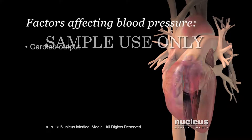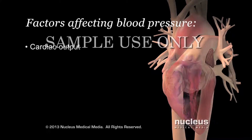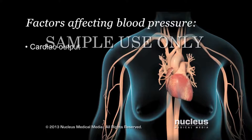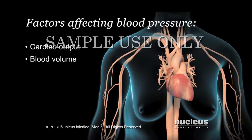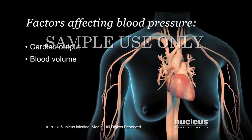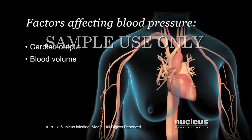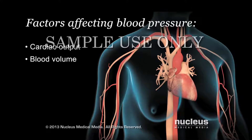The first is cardiac output, or the amount of blood your ventricles push out of your heart each minute. Your blood pressure goes up as cardiac output increases. The second factor affecting your blood pressure is blood volume, or the total amount of blood in your body. Blood pressure also goes up as blood volume increases.